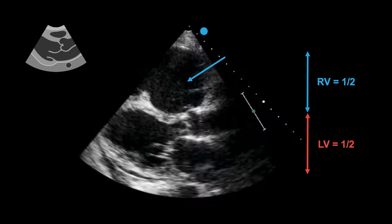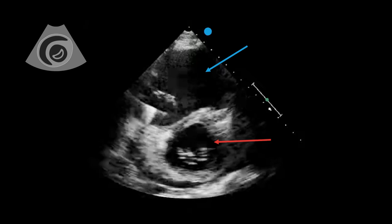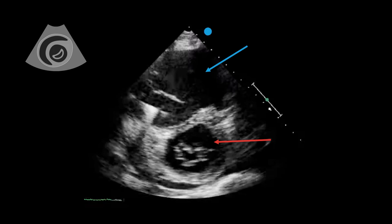The same is true in the parasternal short axis view. Again, the right ventricle looks larger than the left, and there is hardly any motion during systole when you would expect to see the ventricle contract.